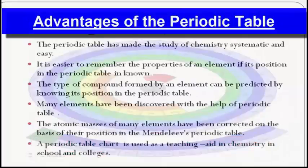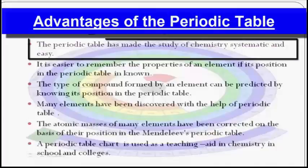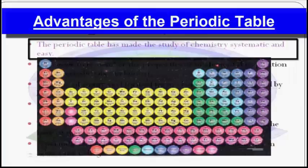Now let's understand the advantages of the modern periodic table. The first advantage is that the periodic table has made the study of chemistry systematic and easy. All elements have been divided into a few groups, with each group containing elements with similar properties. It is much more convenient to study the properties of a few elements in each group than to study the properties of all elements separately.